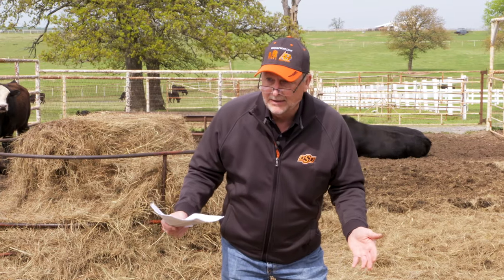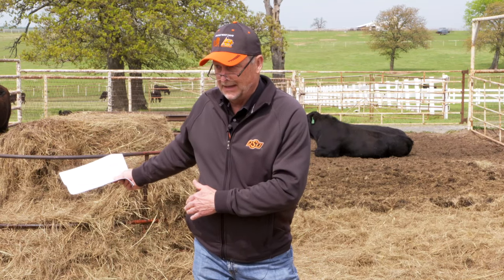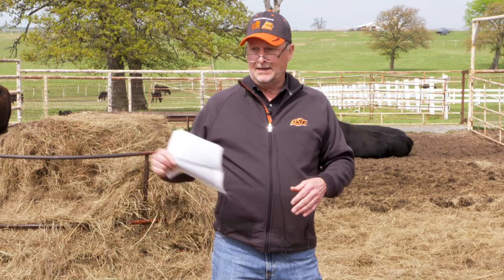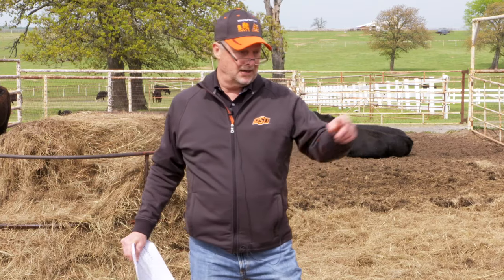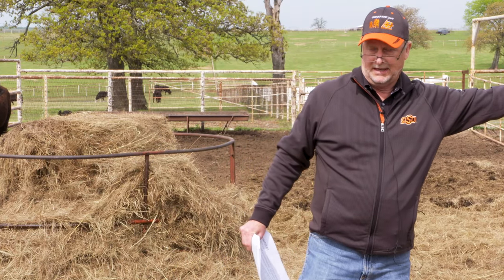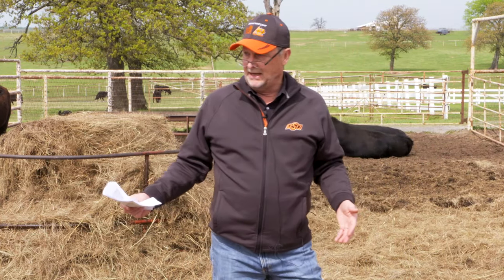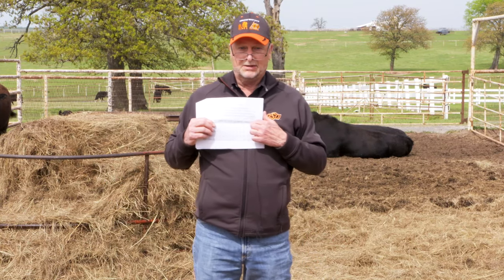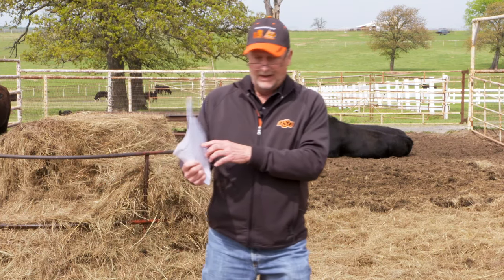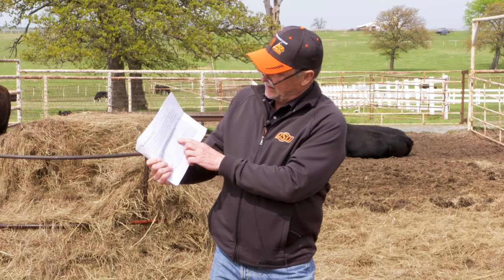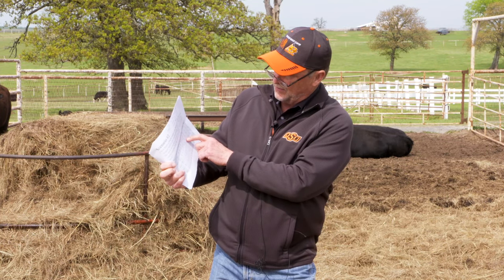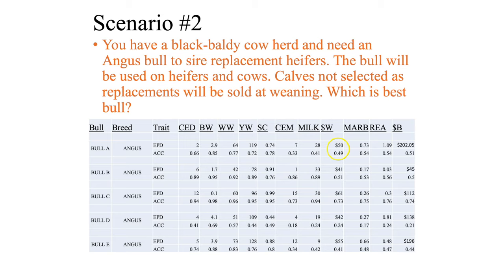And that comparison assumes they're mated to the same females. You can't compare Bull A mated to one set of cows and Bull B mated to a different set of cows — it has to be the same cows. That $61 is compared to the average of the Angus breed. Once we know that, we can compare two individuals: Bull A is $50, and as Dr. Johnson said, contextually, Bull C is going to add $11 more than Bull A for each weaned calf.